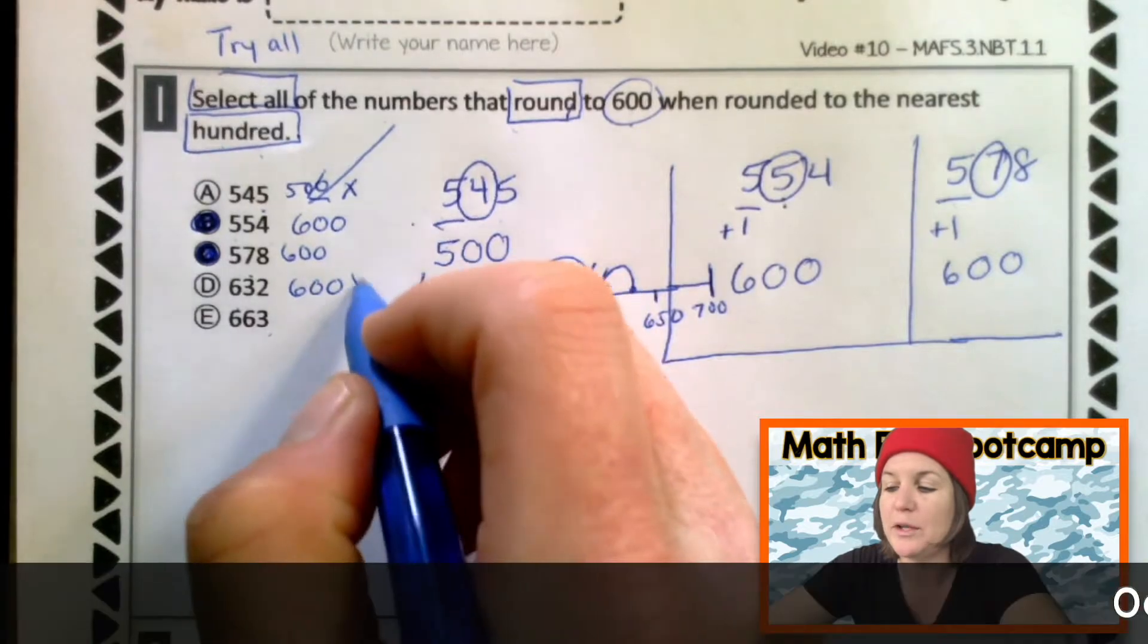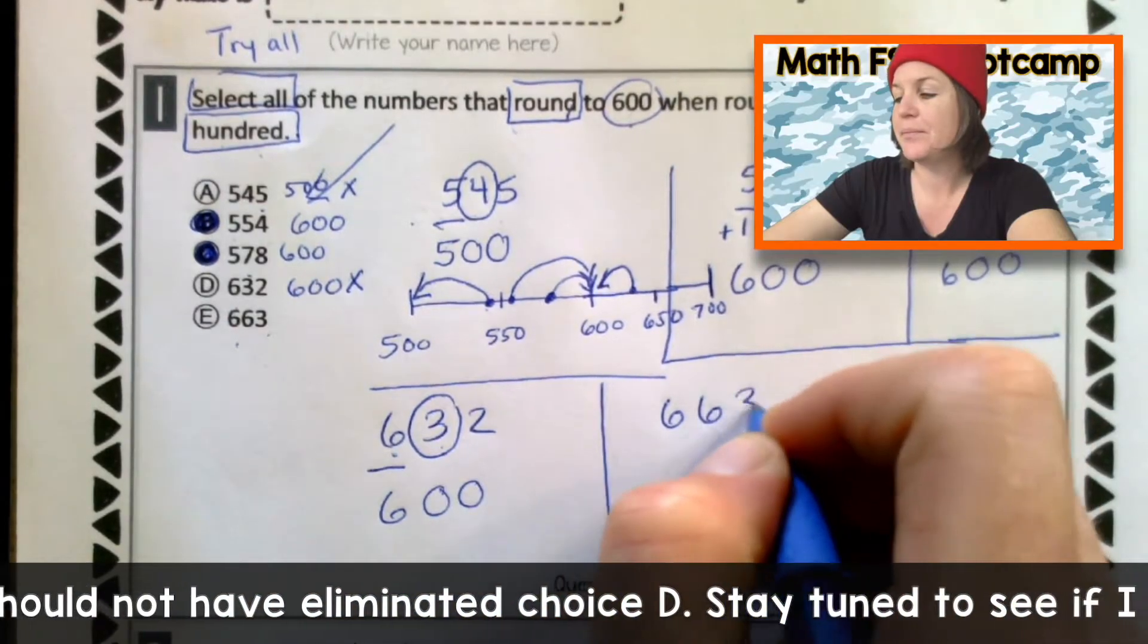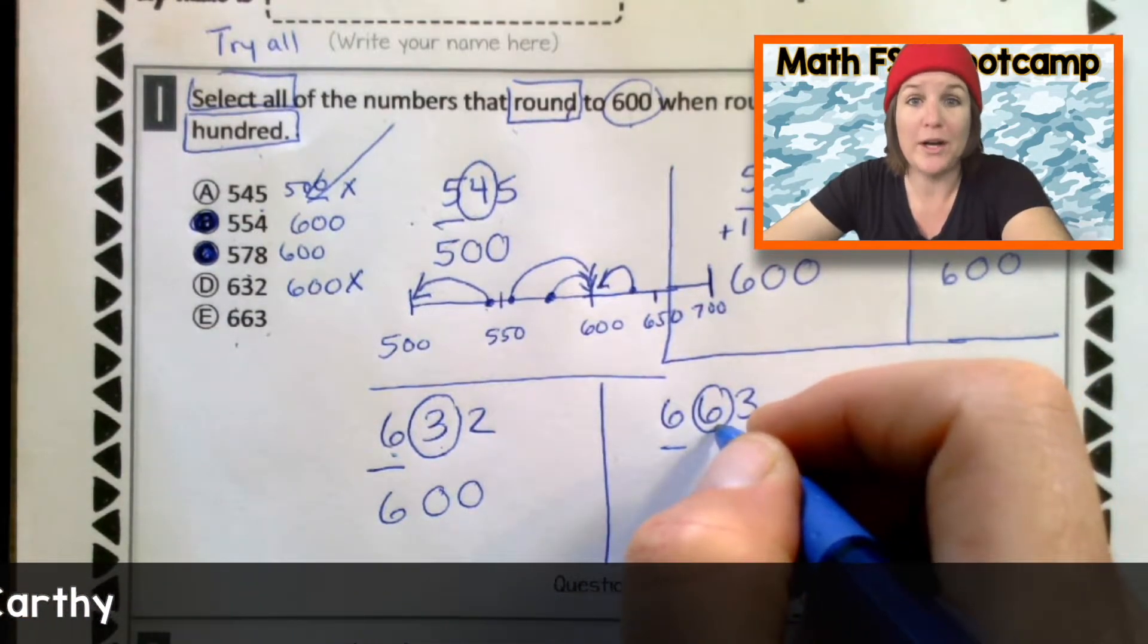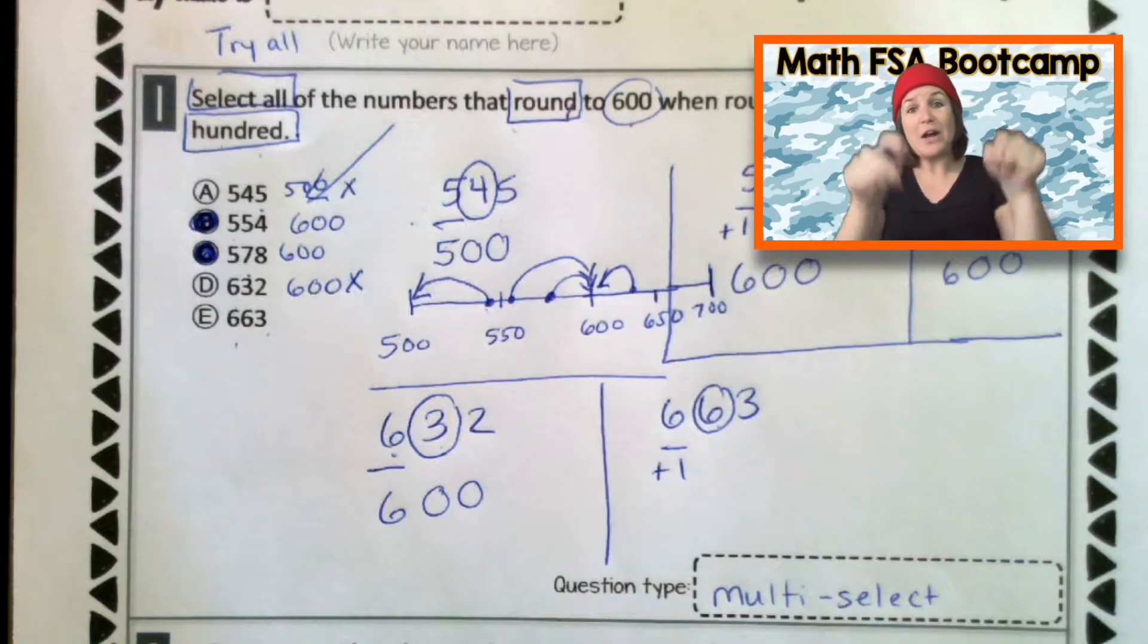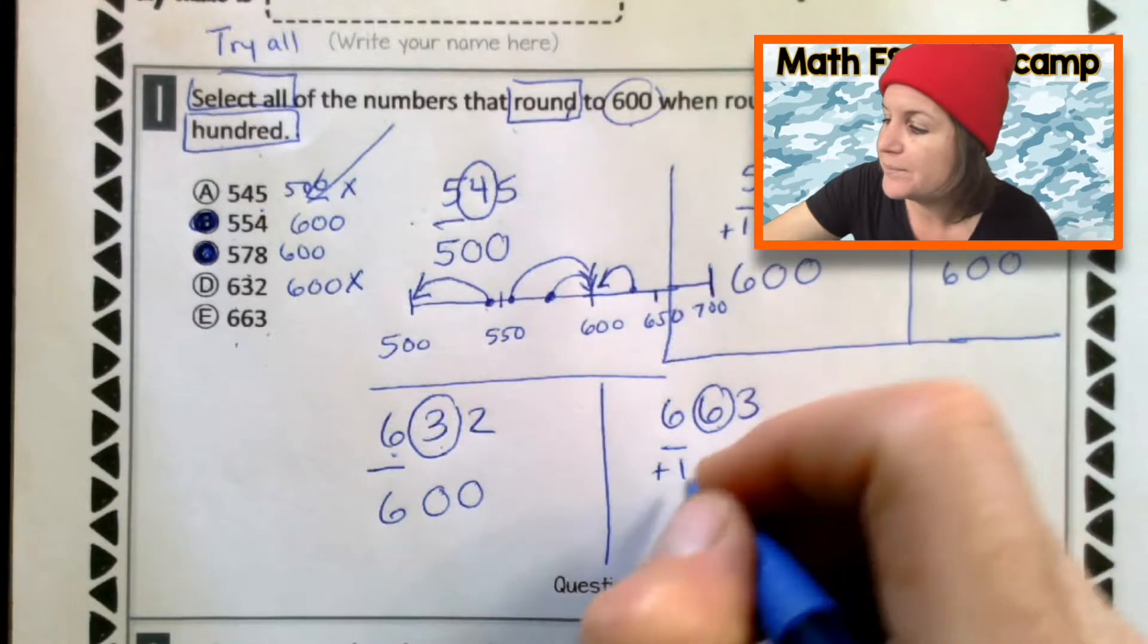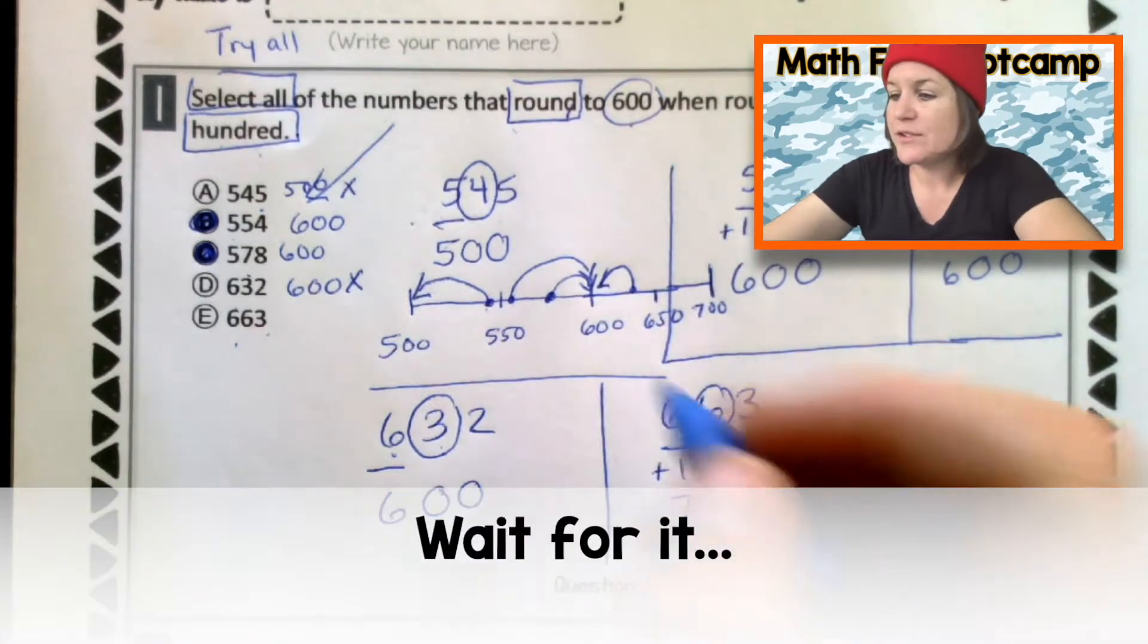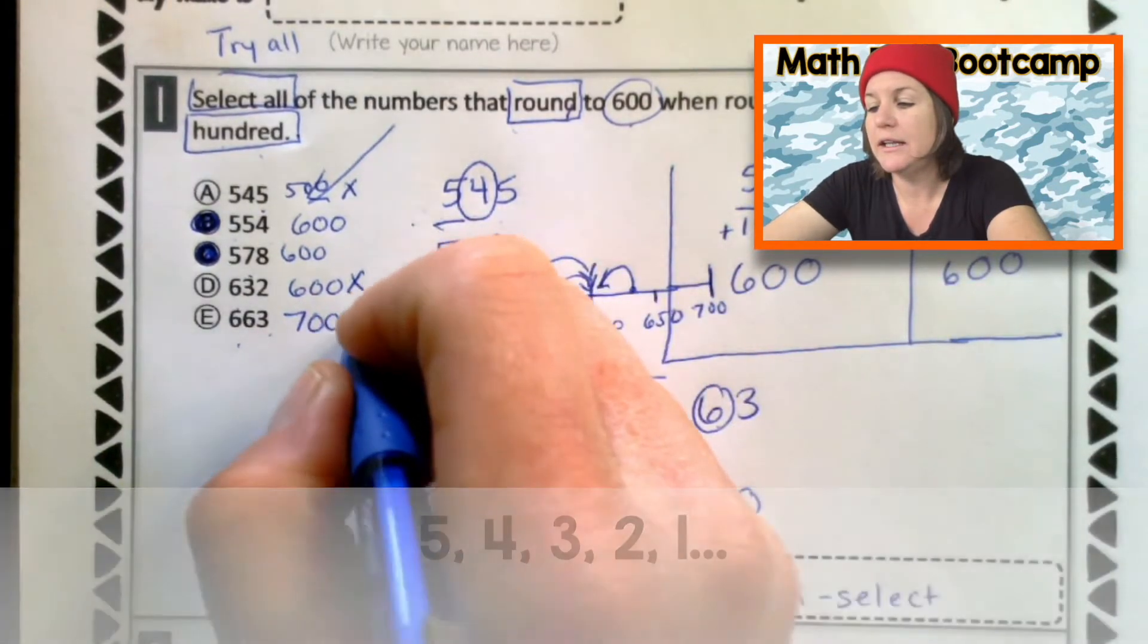The final one. 663. When you round find and underline the place. Spotlight to the right, decide the digits fate. That is five or more. So, we're going to add one to the rounding place. We're going to take care of that right here, right now. What is six plus one? Seven. Everything after becomes zero. Check me out now. I'm the rounding hero. And so, 663 rounds up to 700. So, we can eliminate.